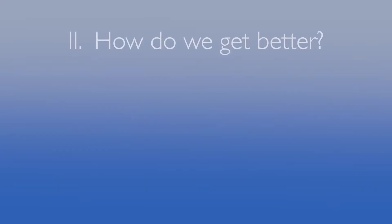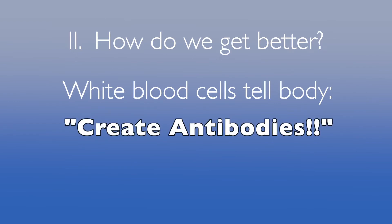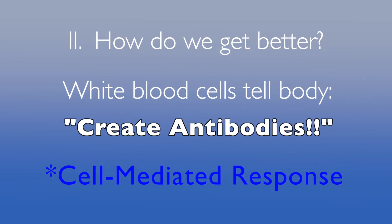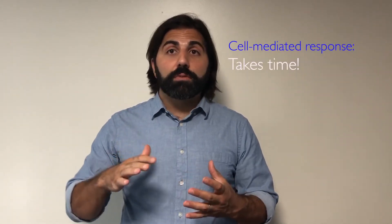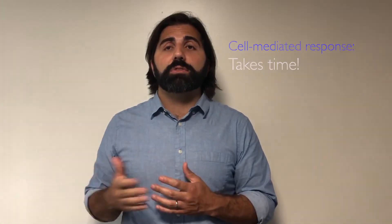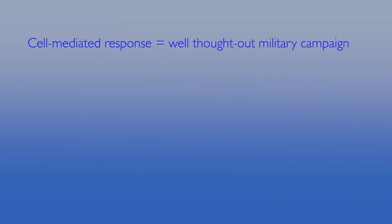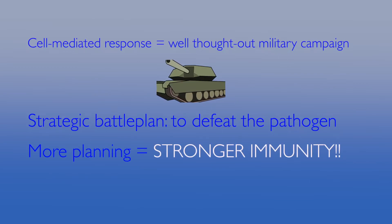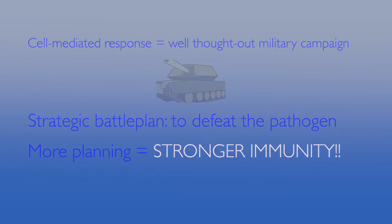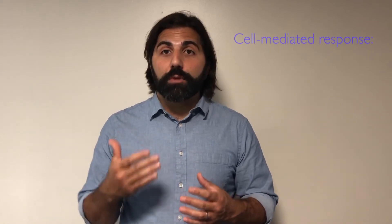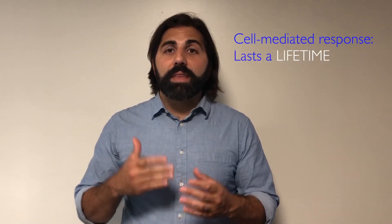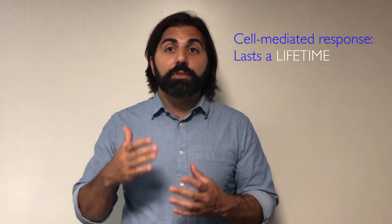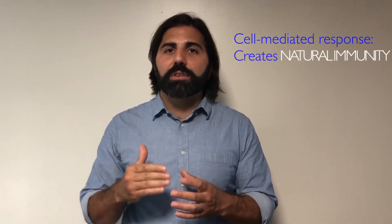We have white blood cells that look for pathogens and the antigens that they carry. White blood cells tell the body that it needs to create antibodies to destroy these antigens. This is called a cell-mediated response, which creates specific antibodies to combat the pathogen. The cell-mediated response does take a while to happen. The immune system needs to communicate with the whole body in order to analyze the best course of action. It is like a well-thought-out military campaign — the immune system strategizes the most effective battle plan to defeat the pathogen. The more planning the immune system does, the stronger the plan will be. After the cell-mediated response is formed and carried out, its effects will generally last an entire lifetime. The next time that same pathogen enters the body, the immune system already has a plan of attack drawn up and ready to implement, and can quickly and efficiently strike down the pathogen.